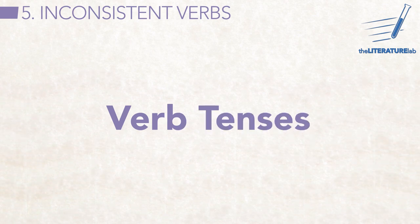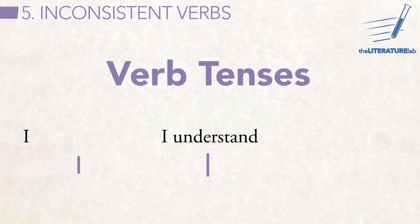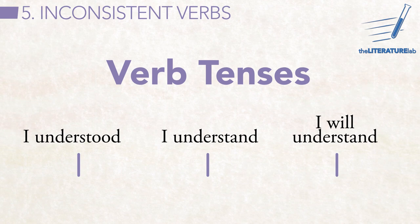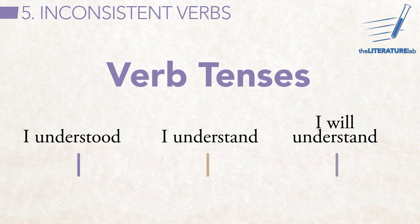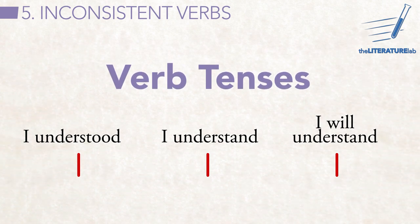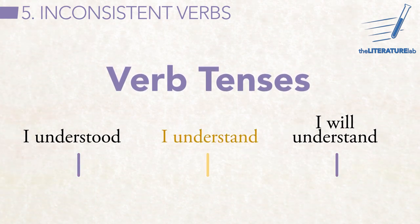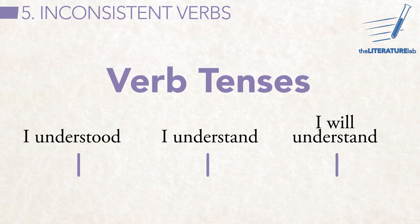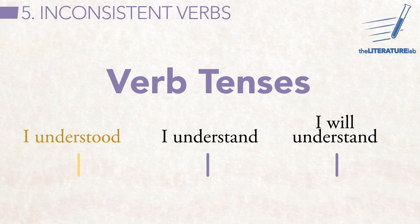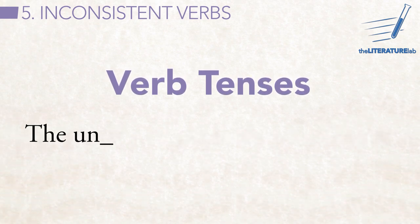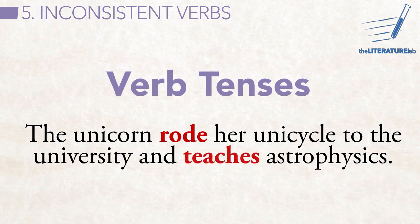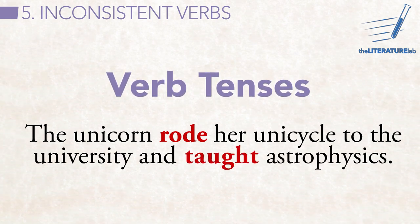Most verb tenses refer to time — past, present, or future. 'I understand' is present tense, 'I understood' is past tense, and 'I will understand' is future. The thing is, you need to choose one tense and stick with it. Inconsistencies can confuse your reader. The general rule: describe things in texts in the present tense, but things in history in the past. When you're rereading, make sure any shift in tense is deliberate.